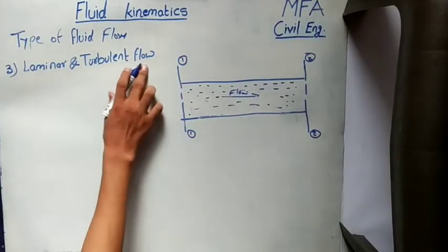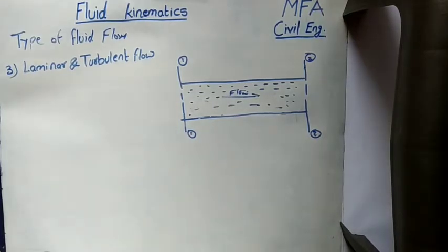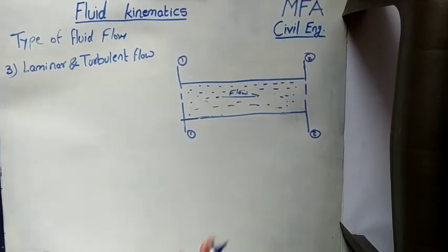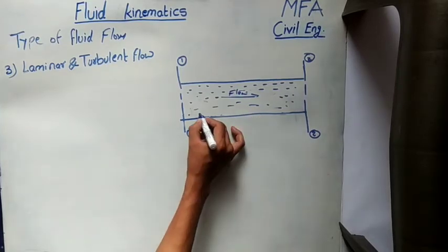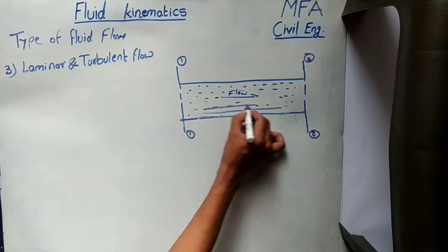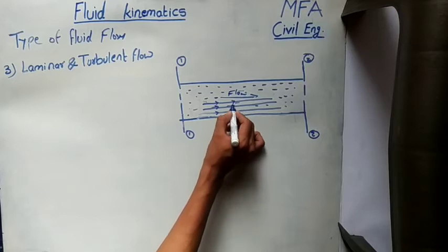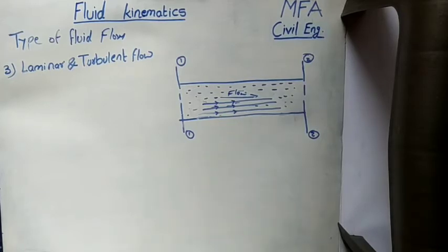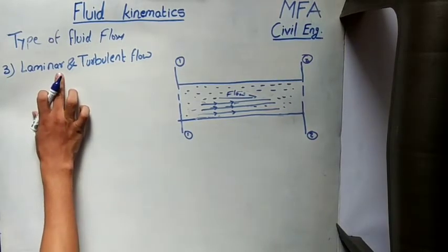Third is laminar and turbulent flow. Laminar flows are those in which particles of the fluid move along well-defined paths called streamlines, where all streamlines are straight and parallel. In a laminar flow system, each streamline is straight and parallel to the others, and fluid particles move in the form of layers along these well-defined paths. Laminar flow is also called viscous flow or streamline flow.